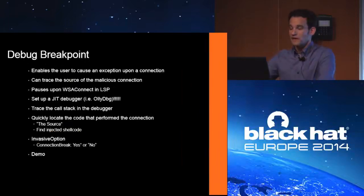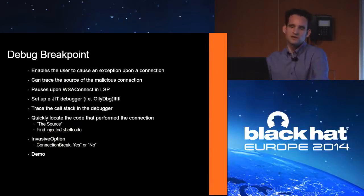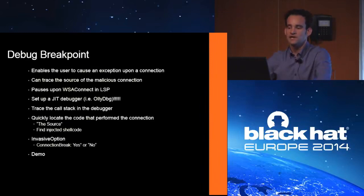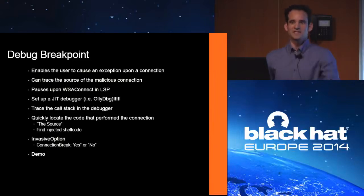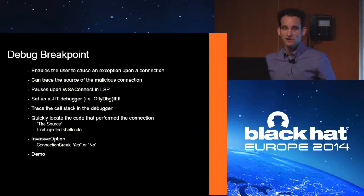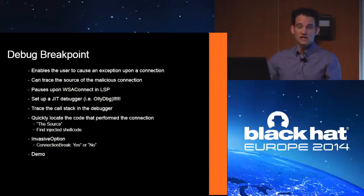With process logging on, when I open Internet Explorer and go to google.com, I can see it requested google.com and then it also says Internet Explorer connected over localhost to port 80. The PID of Internet Explorer was 1664. That makes sense because I went into Internet Explorer and browsed to that website. So that's just process logging in action.